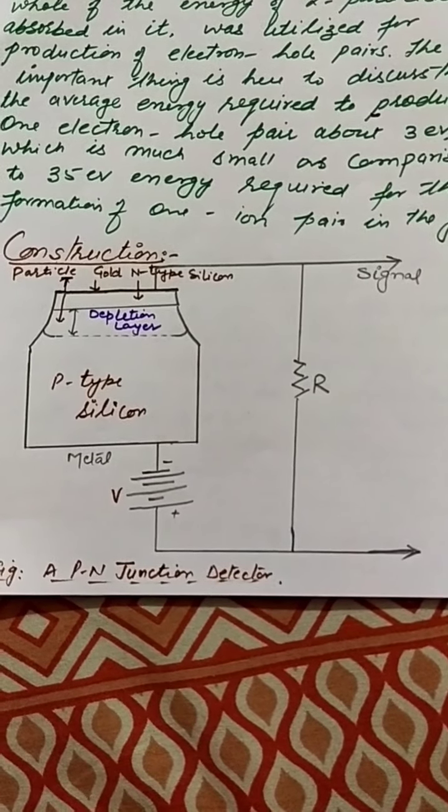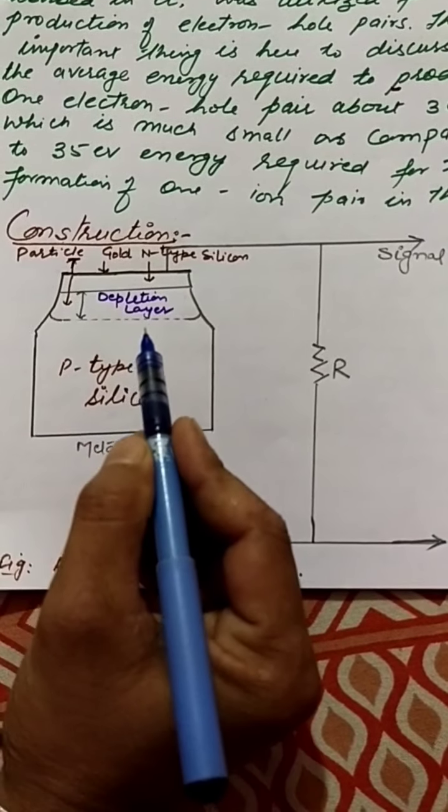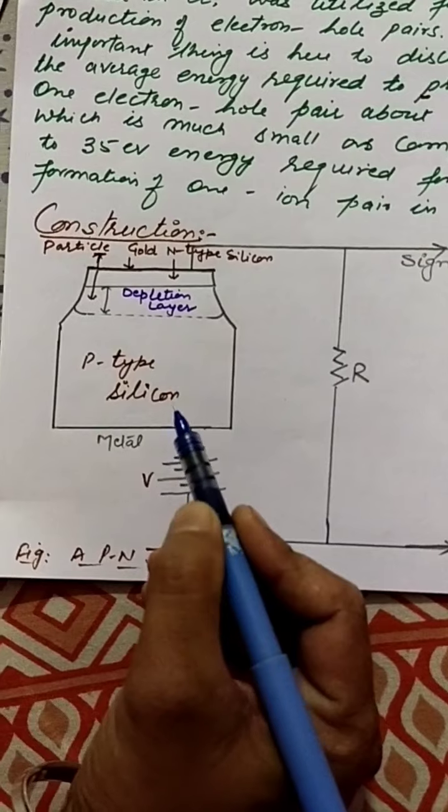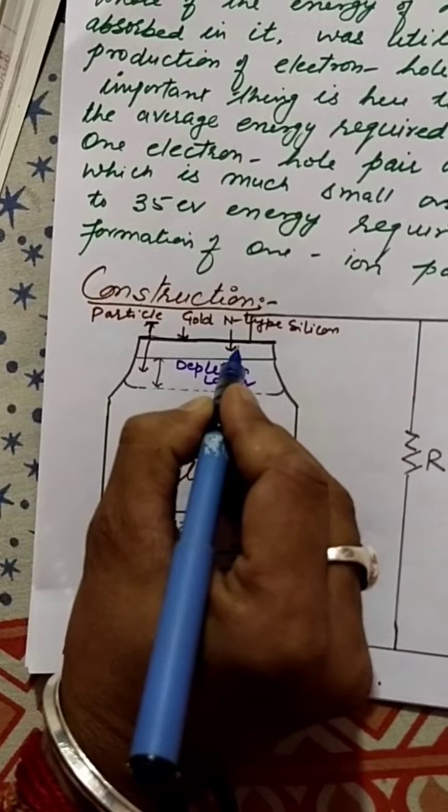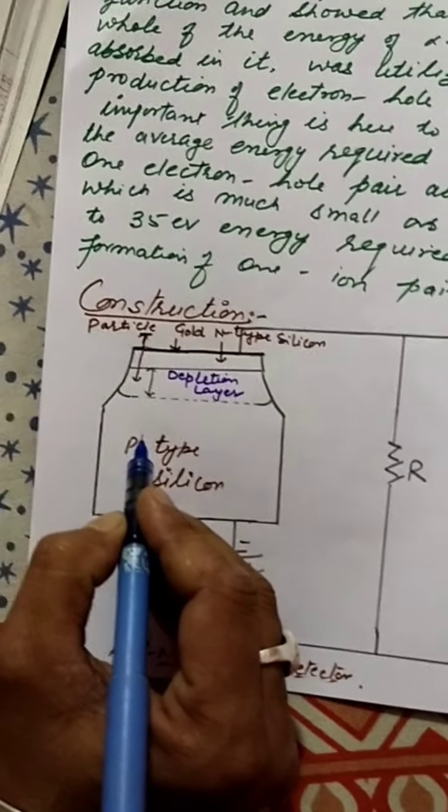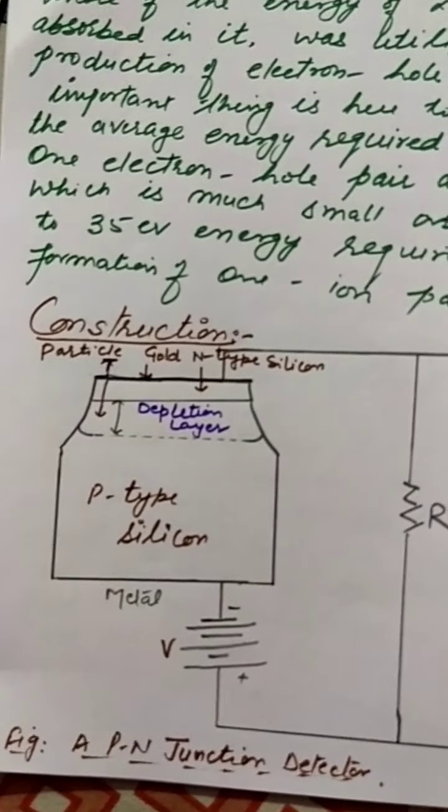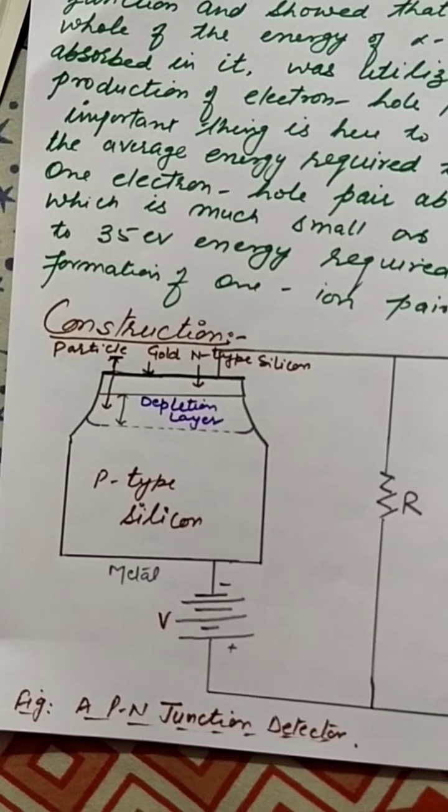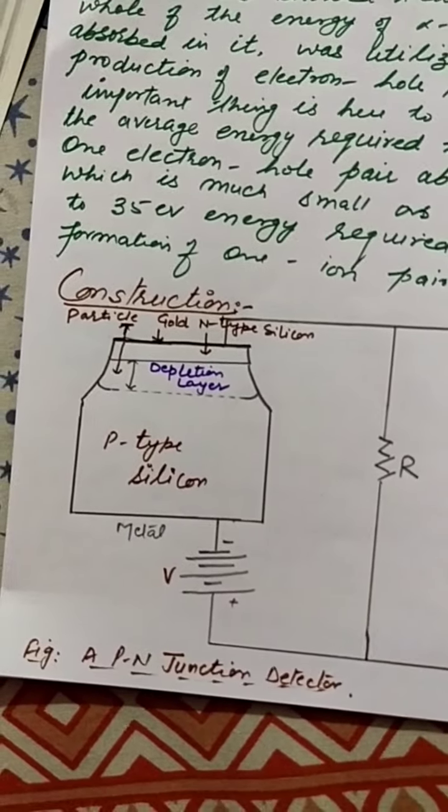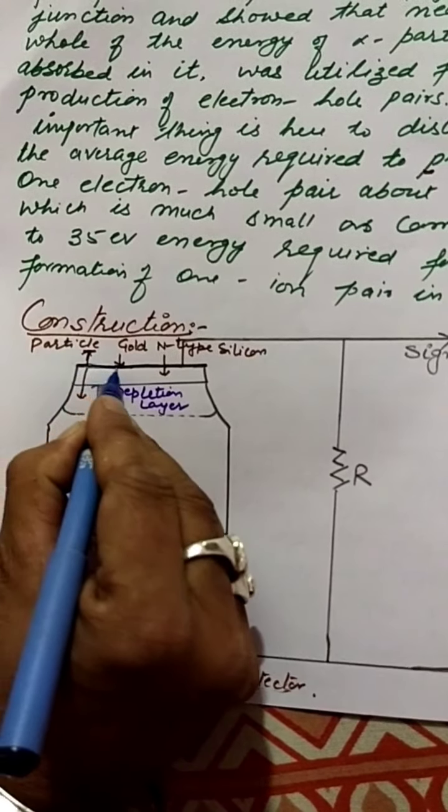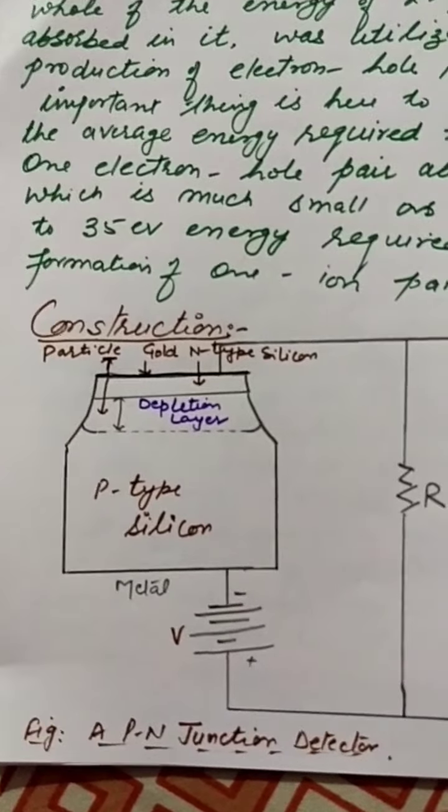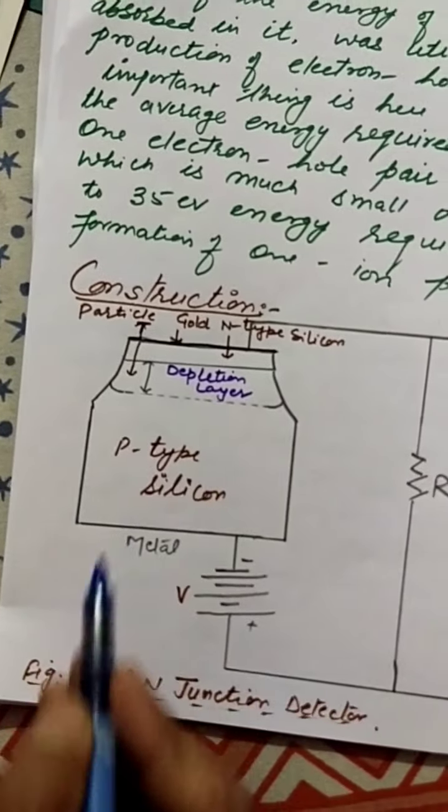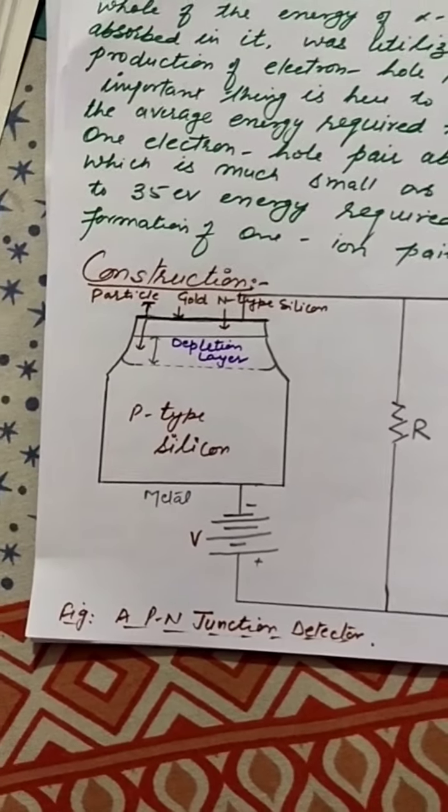The reverse bias diode helps in minimizing the current flowing in the detector when no radiation is striking the detector. A reverse bias applied to the gold film pushes all the positive charge carriers away from the junction and produces a depletion layer, as shown in this figure. The depletion layer contains no positive or negative charge carriers.